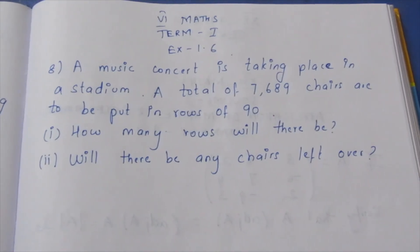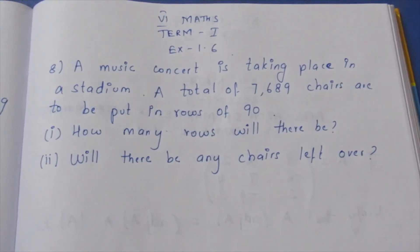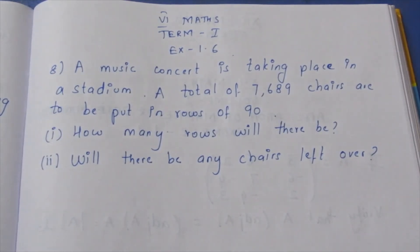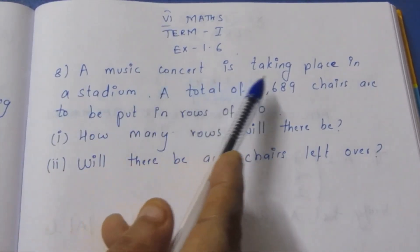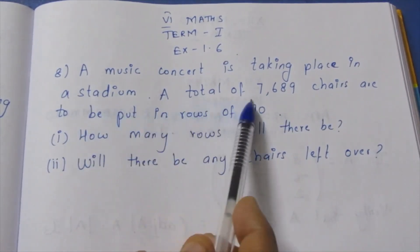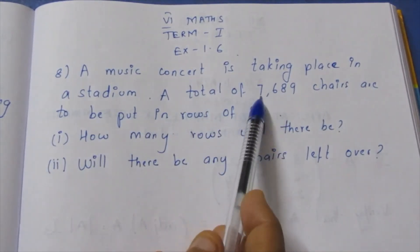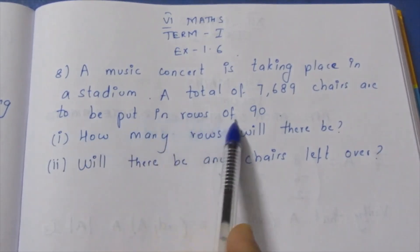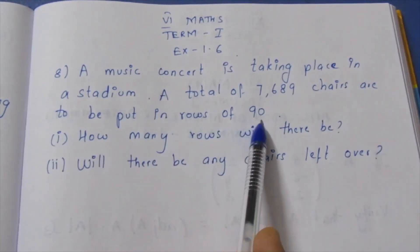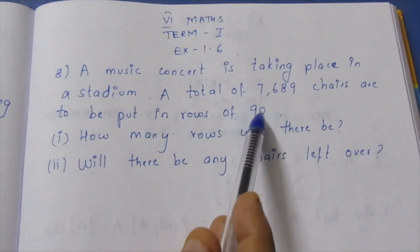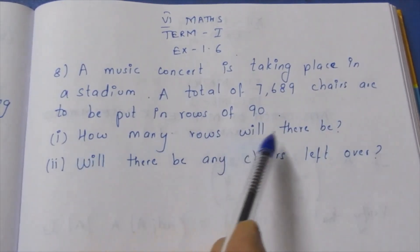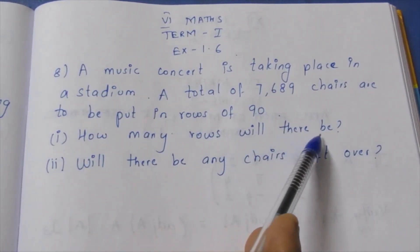Hello viewers, I am Matli. In 6th grade, Term 1, Exercise 1.6, 8th sum. The question: A music concert is taking place in a stadium. There are a total of 7,689 chairs to be put in rows of 90. One row has 90 chairs. How many rows will there be?